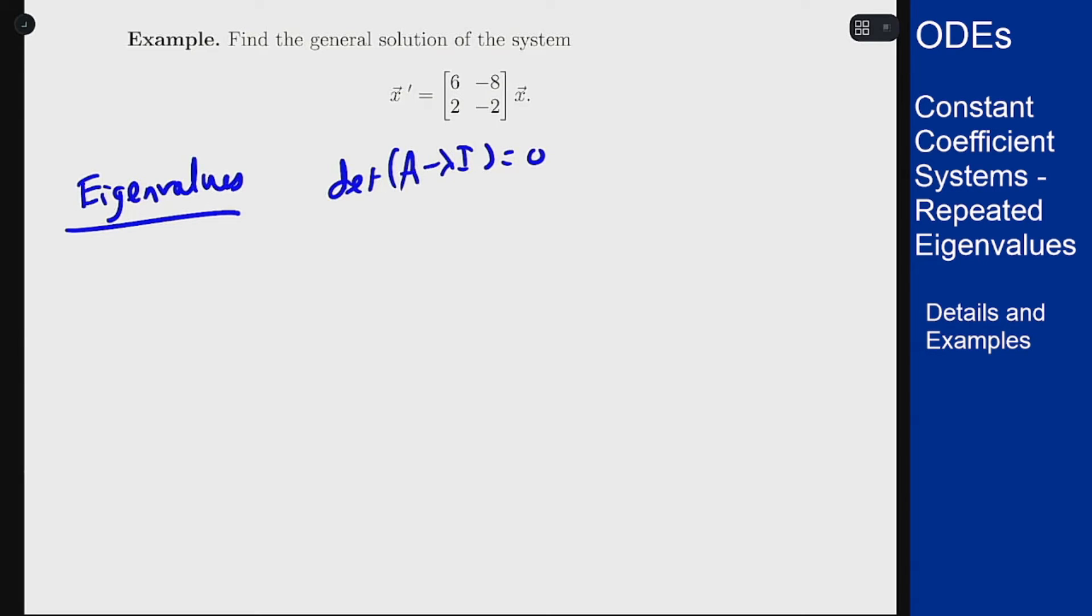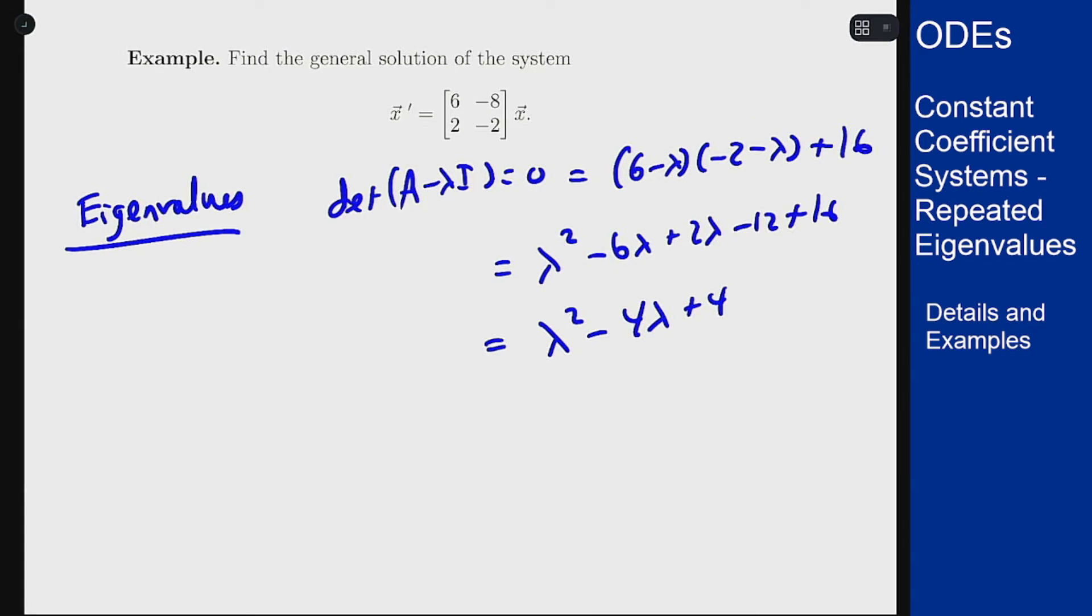So as always, we start by looking for the eigenvalues, which are given by determinant of A minus lambda I equals zero, which in this case is (6 minus lambda)(minus 2 minus lambda) plus 16. This gives lambda squared minus 6 lambda plus 2 lambda minus 12 plus 16, which is lambda squared minus 4 lambda plus 4, which gives a double root at 2. And yes, this is the same problem we solved previously, but we'll see it in sort of a complete context as how you would go through these problems normally.